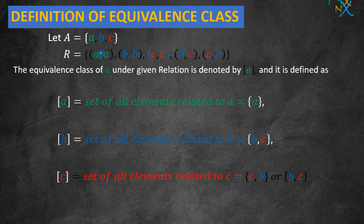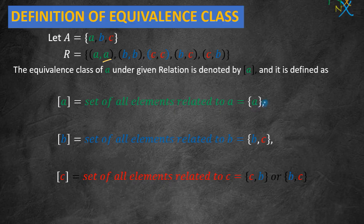So the equivalence class of a — what will it be? We check which elements are related to a in the given relation. The equivalence class of a is the set containing only one element, that is {a}.